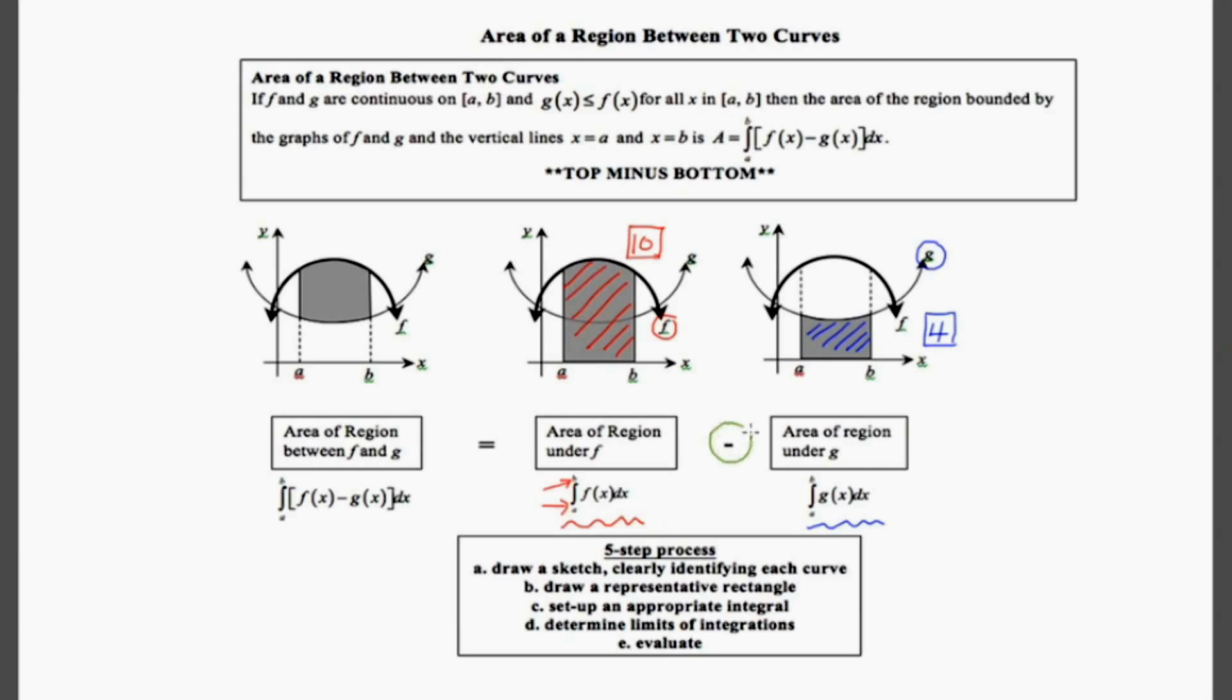Now, if I subtract the blue region from the red region, in other words I subtract 4 from 10, I'm left with 6 and I'm also left with the region that's between the two curves, which is precisely what we're trying to find.